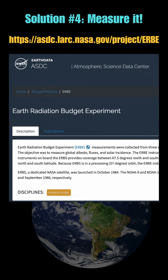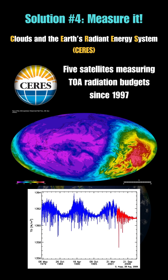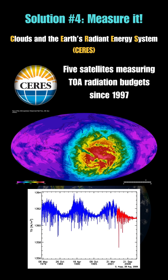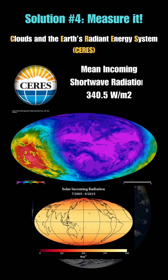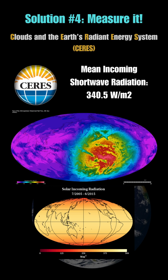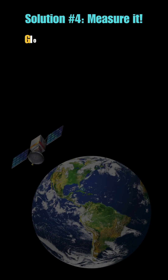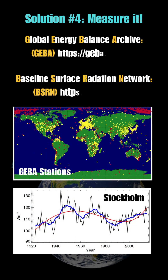With the launch of the CERES satellites in 1997, a real-time energy budget was created for the whole Earth, with mean insolation around 340.5 watts per square meter. In addition, a vast network of ground stations monitors radiation reaching the surface.